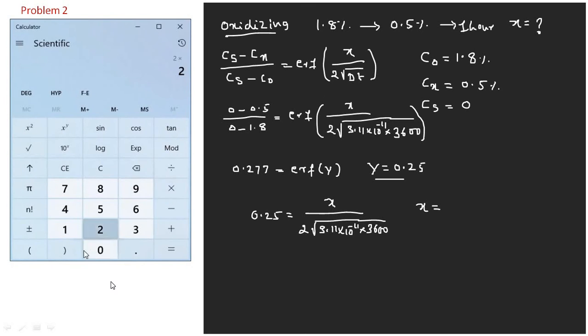Here you can see we are calculating it: 2 multiplied by (3.11 × 10^-11 × 3600). We close the bracket and find out its root and multiply it by 0.25. The value comes out to be 1.673 × 10^-4.